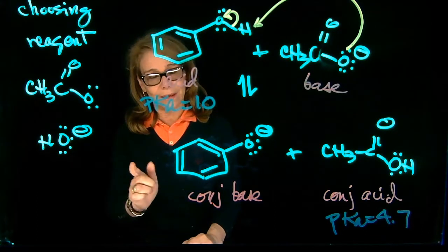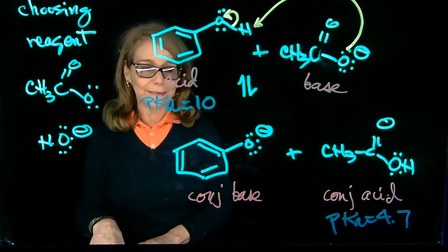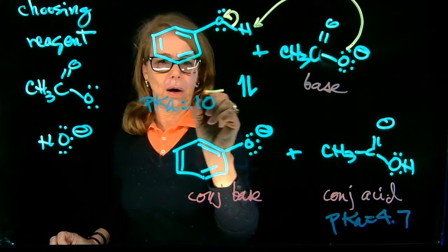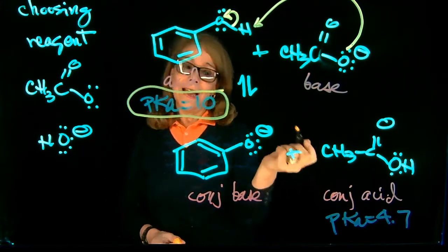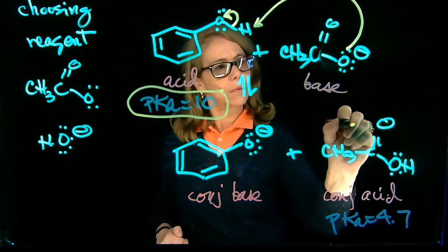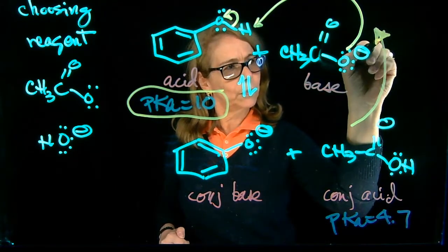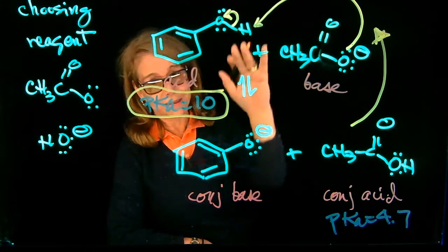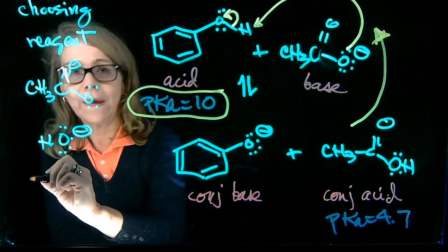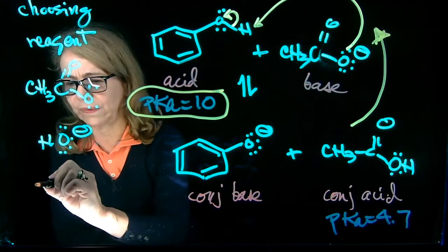We have said before that the equilibrium is shifted towards the weakest acid. The weakest acid will have the largest pKa. So as we see here, the larger pKa is this one. So that's the weakest acid. In other words, this reaction won't work. It won't go to products as I want it to. It will go to reactants. It's shifted to reactants.